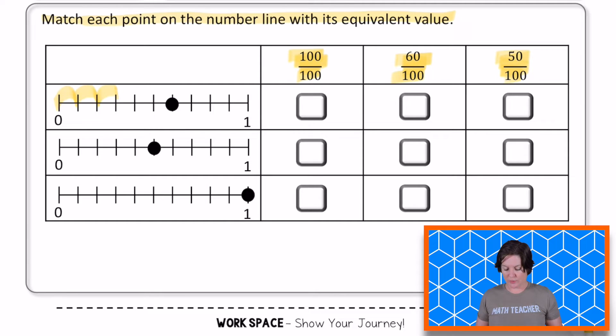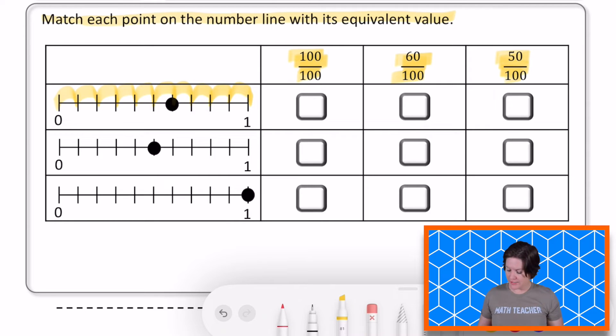One, two, three, four, five, six, seven, eight, nine, 10. So I knew that we were working with equivalent fractions here because our number line is broken into tenths, but our fractions that we have to select are represented using hundredths. So let me walk through my journey down here on paper. Here we go.